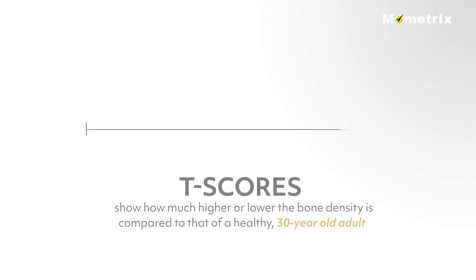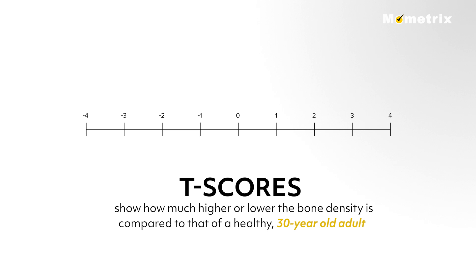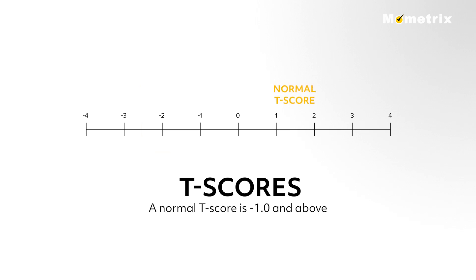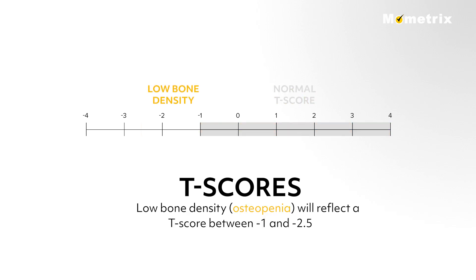Bone density testing results are reported using T-scores, which show how much higher or lower the bone density is compared to that of a healthy 30-year-old adult. The lower the T-score, the lower the bone density. A normal T-score is negative 1.0 and above. Low bone density, or osteopenia, will reflect a T-score between negative 1 and negative 2.5.